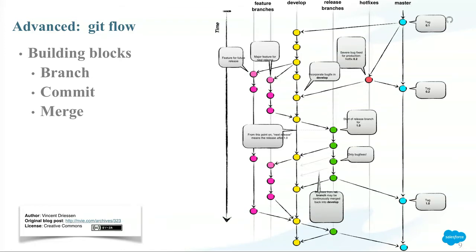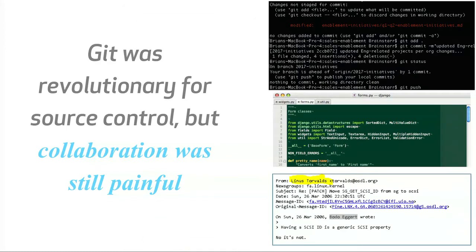Moving on from Git — Git was really revolutionary for source control, but collaboration was painful. Often developers were working on the command line, editing documents with text editors locally, having to push them with the CLI. And if they wanted to have discussions about their work, they generally did this over email lists. So collaboration was kind of an afterthought, not part of Linus's invention.